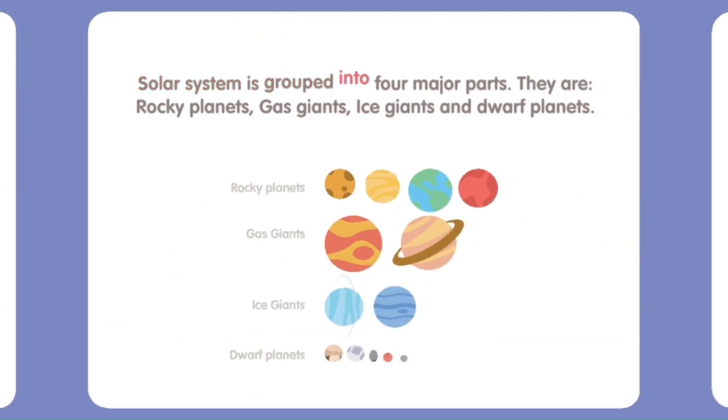The solar system is grouped into four major parts. They are Rocky Planets, Gas Giants, Ice Giants, and Dwarf Planets.